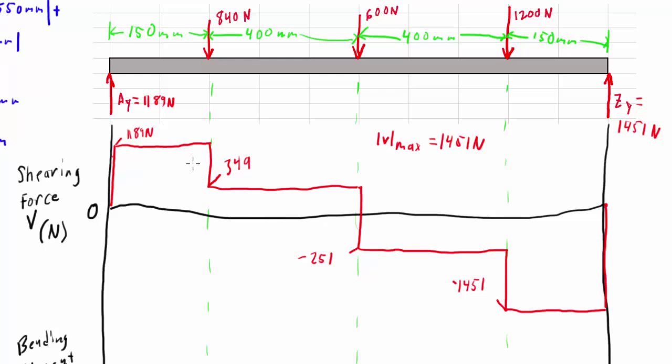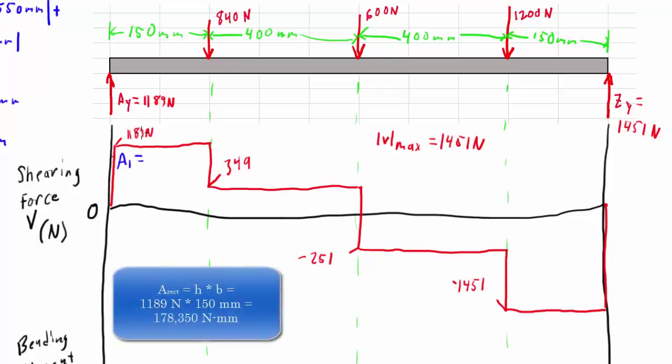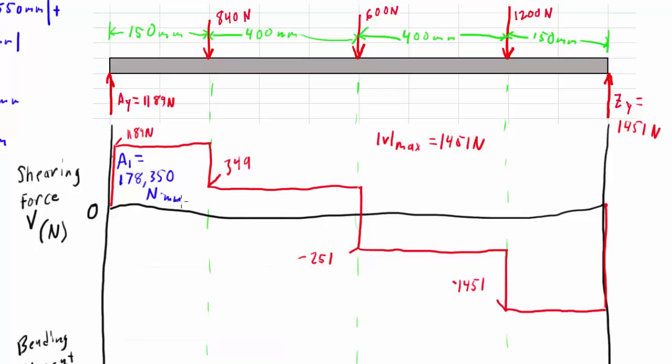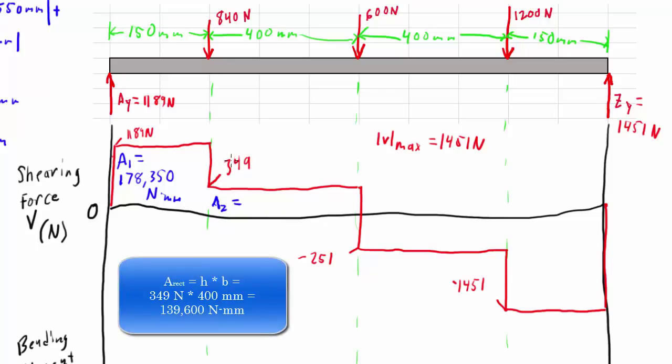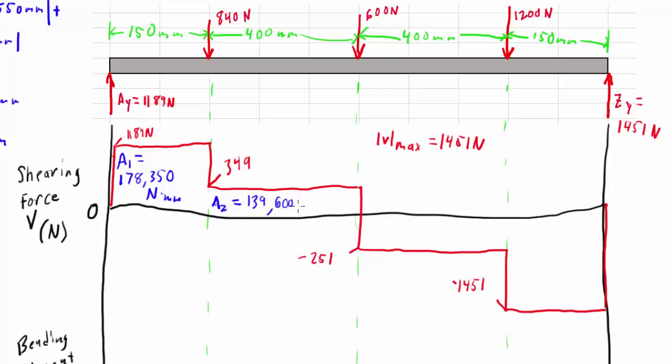Okay, so the next thing we need to do is calculate all the areas under here. Now, if you've taken calculus, you understand the value of being able to take the areas under a curve, but luckily for us, we just have rectangles to deal with. So if I calculate the area here, I have 1189 Newtons times 150 millimeters, and that gives me 178,350 Newton millimeters. The next one I'm going to call area 2 is 349 Newtons times 400 millimeters, yields 139,600 Newton millimeters. Okay, so those are all the positive ones.